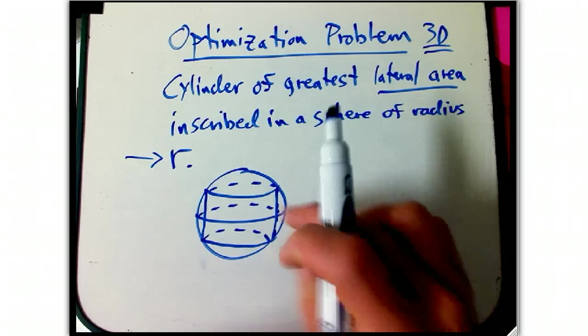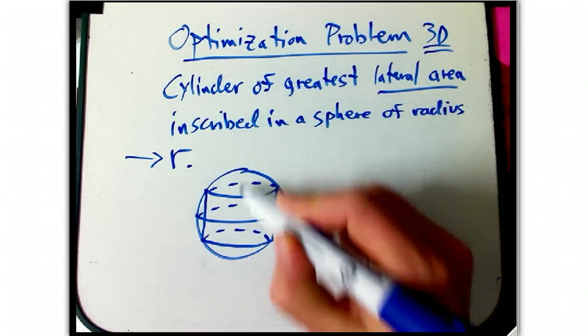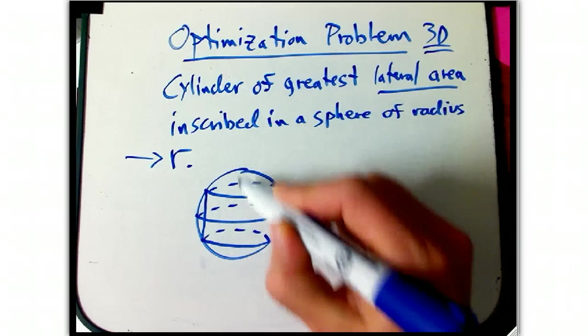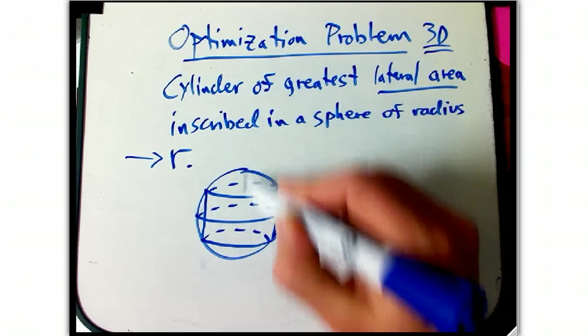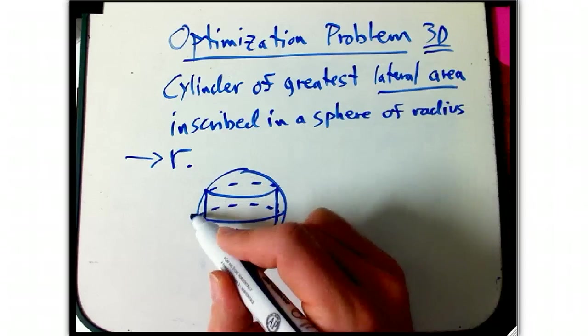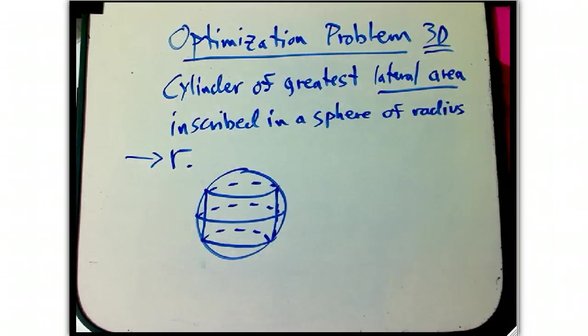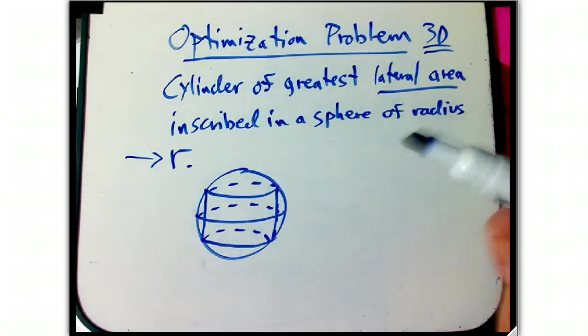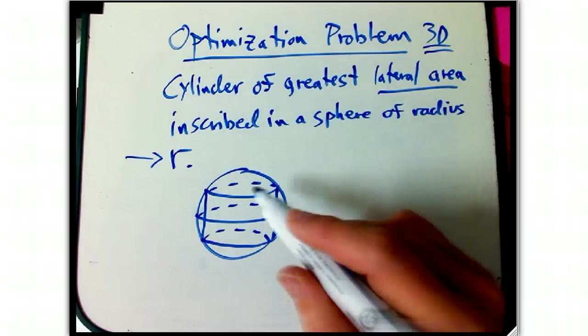And it could be really skinny, maybe it could be actually really skinny. Well, that might not have the best surface area, because it's really tall, but it's pretty skinny. Or it could be really wide, but then it'd have to be really flat. That's probably not going to be the best either. So it's probably an interesting optimization problem, in the sense that the endpoints aren't going to be the answers.